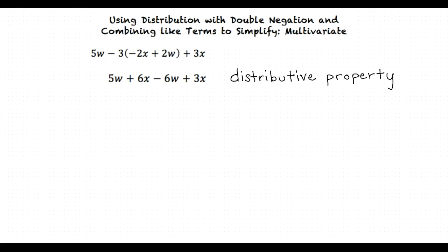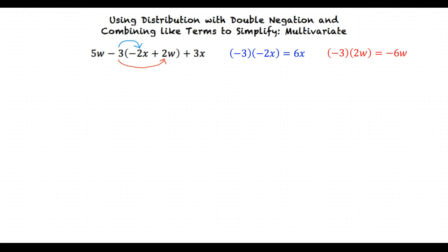Okay, let's go back to our original problem. Using the distributive property we will distribute the negative 3 to every term inside the parentheses. First we multiply negative 3 by negative 2x and we get positive 6x. Then we multiply negative 3 by 2w and we get negative 6w.